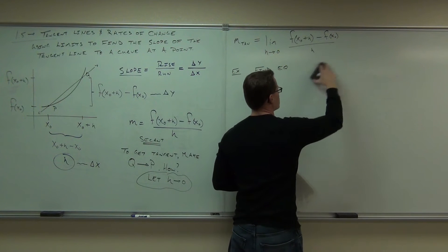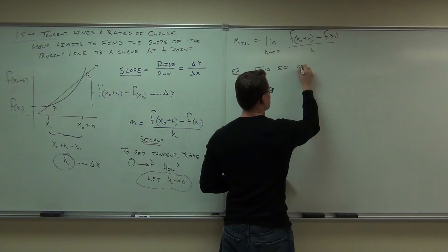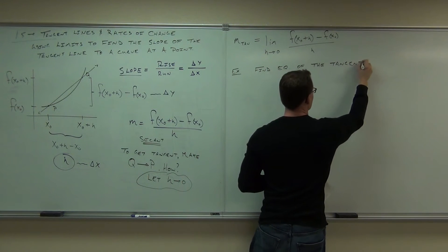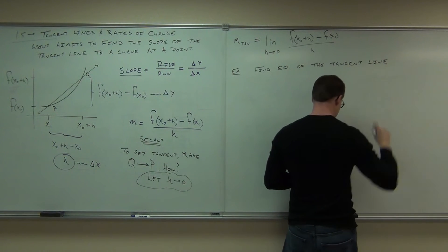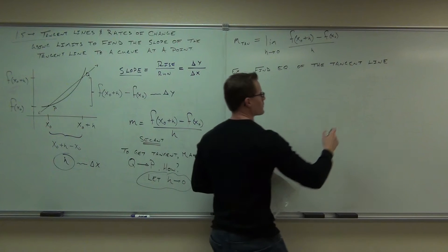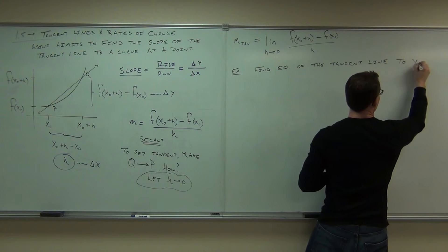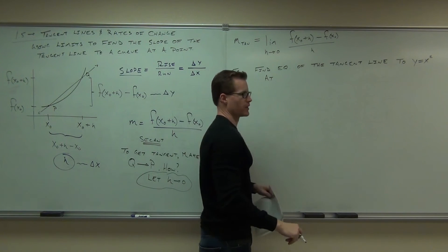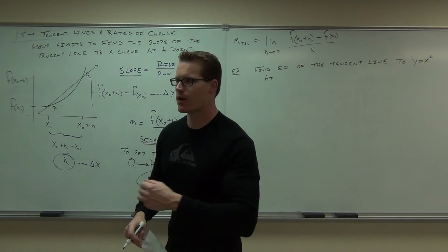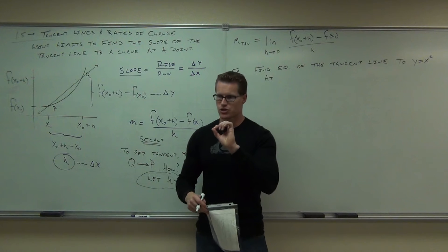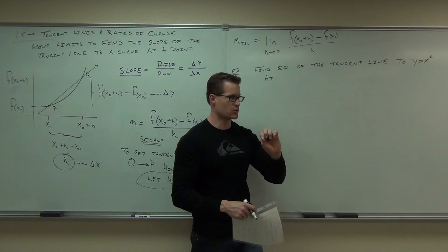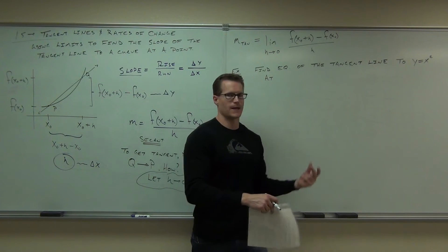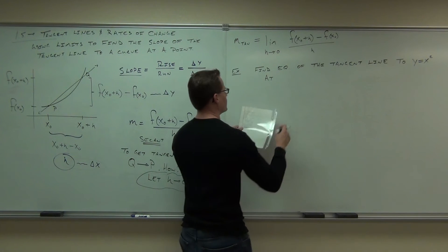So, find the equation of the tangent line to y equals x squared at the point - right now I'm going to give you an actual point. That's how I've defined our function. X sub 0 is the actual value. It's a fixed point of x. It says you have an x value of this number. In the future, I'm not going to give you that. We're going to be able to find the slope at any point. And that's even more cool. Even more cooler at 1, 1.